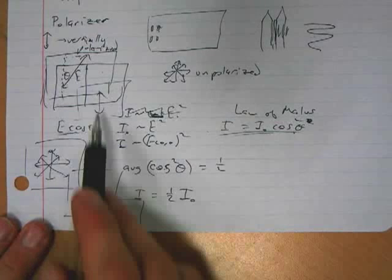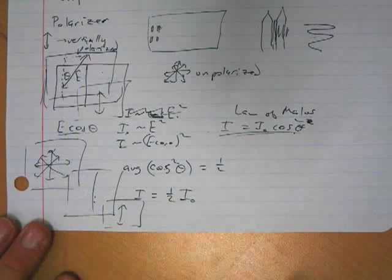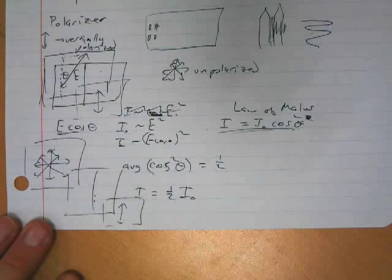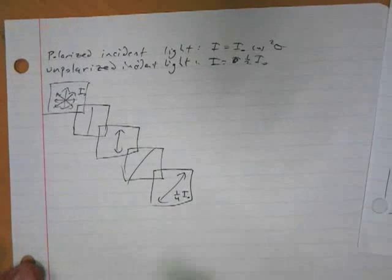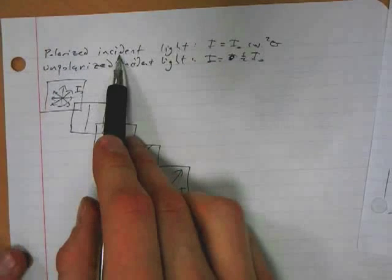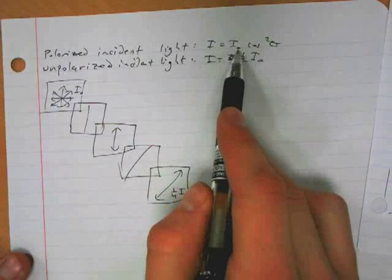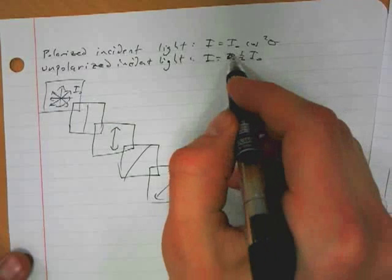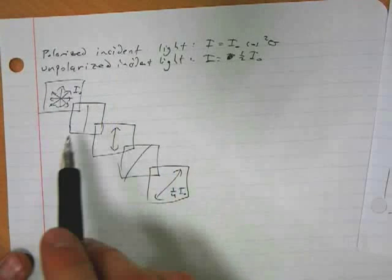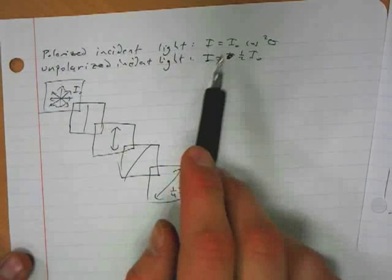So to summarize: for polarized incident light, the intensity transmitted equals the initial intensity times cosine squared theta, where theta is the angle between the polarization direction and the polarizer. For unpolarized incident light, the intensity transmitted is half the original intensity.